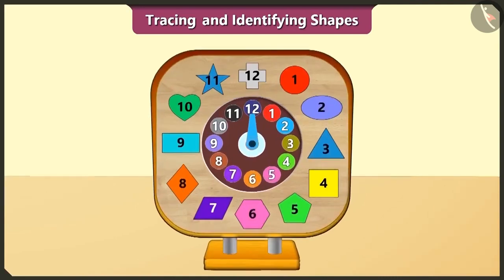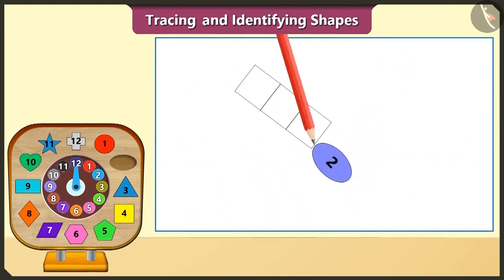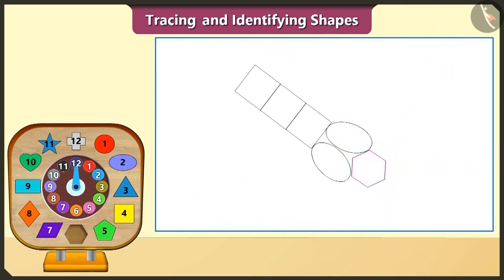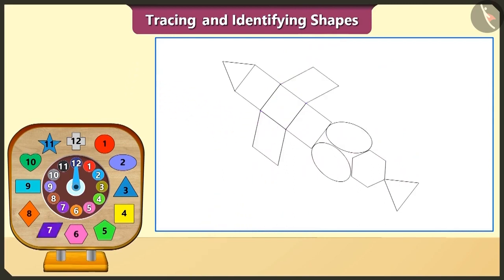Now let's trace some of these shapes and draw a picture. First of all, we will trace the square-shaped block and draw one, two, three squares. Let's now trace the ellipse — one and two ellipses. Now we will draw a hexagon shape by tracing the hexagon block under these two ellipses. Now we will trace this triangle block and draw two triangles. Next we will take the quadrilateral block and trace it to draw two quadrilaterals.